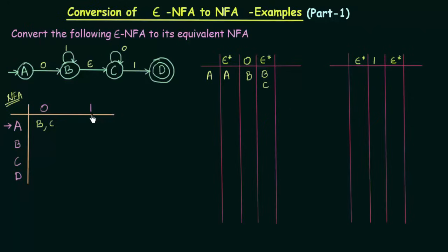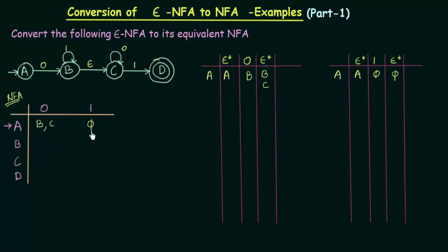Now let's see A on input 1. The Epsilon closure of A is A itself, and A on input 1 does not go anywhere, so it is phi. That means A on input 1 will not go anywhere in the NFA.